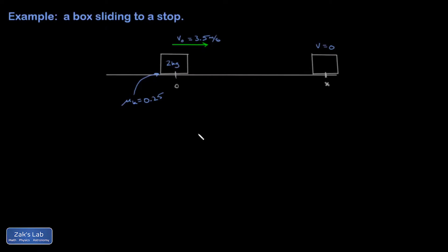In this problem, we've got a box sliding to a stop from some initial known velocity of 3.5 meters per second. It experiences a kinetic friction coefficient of 0.25 between the box and the floor.